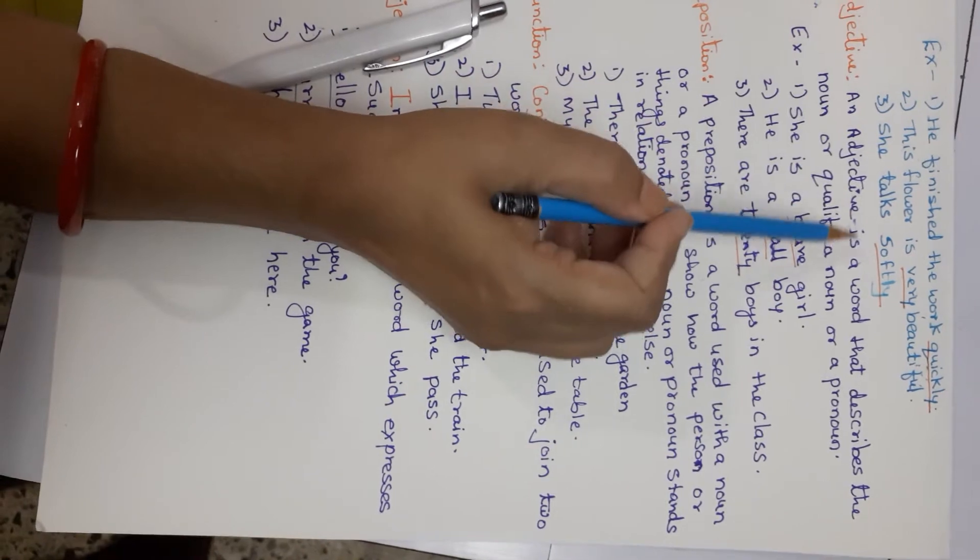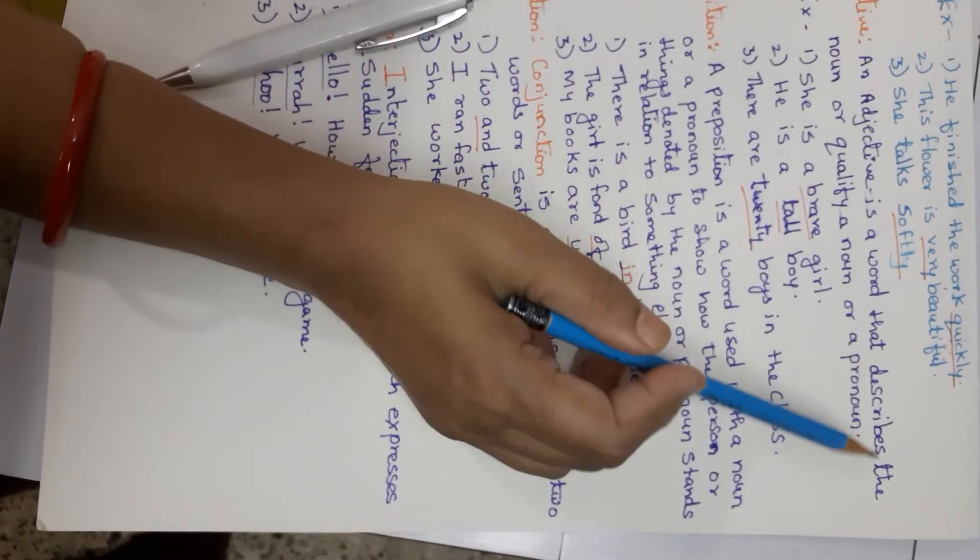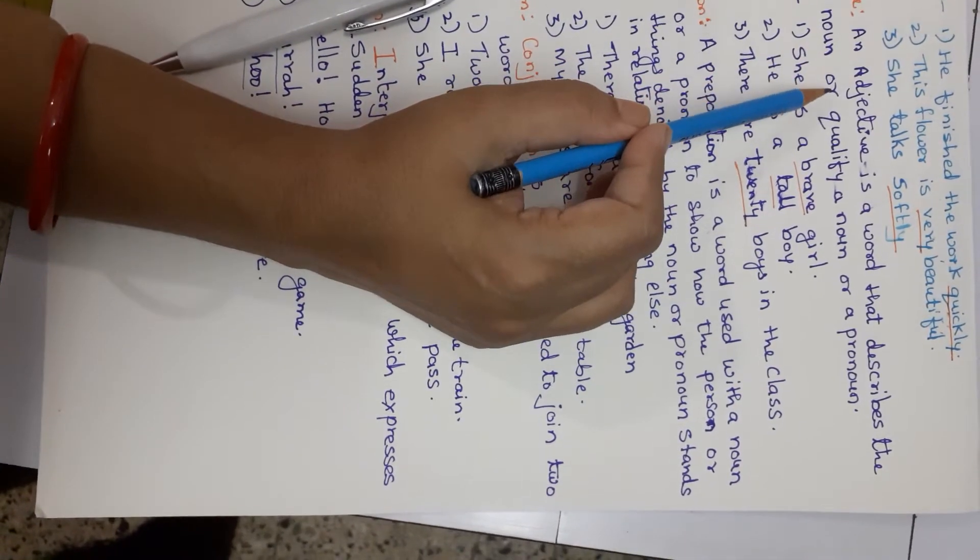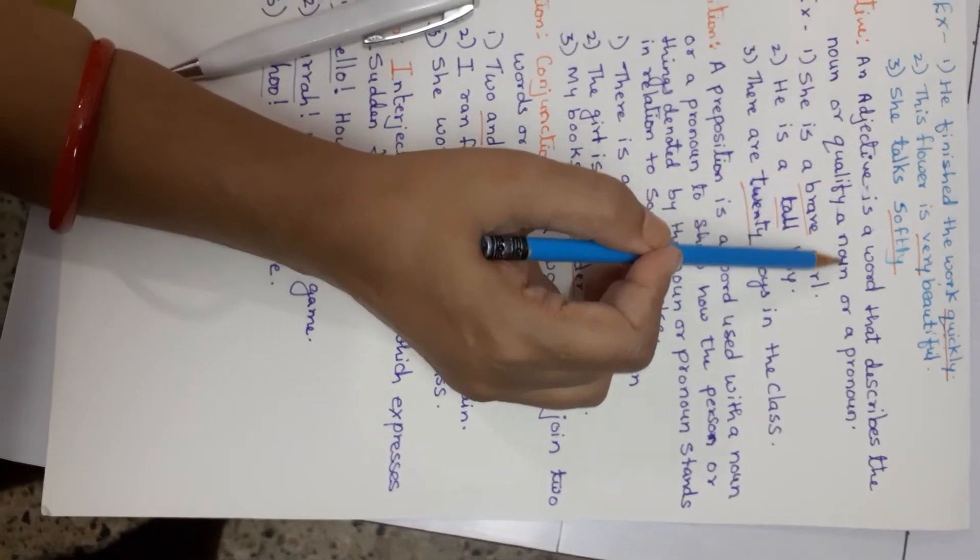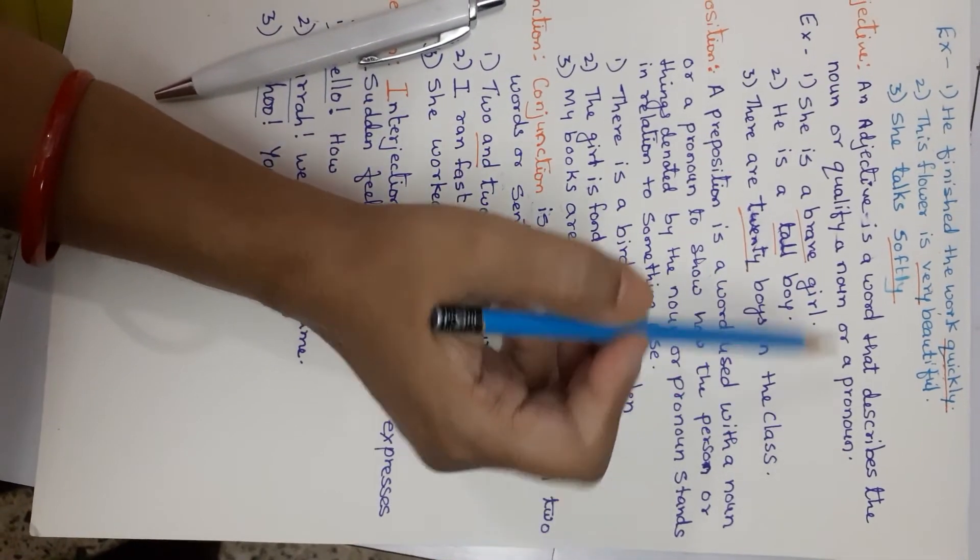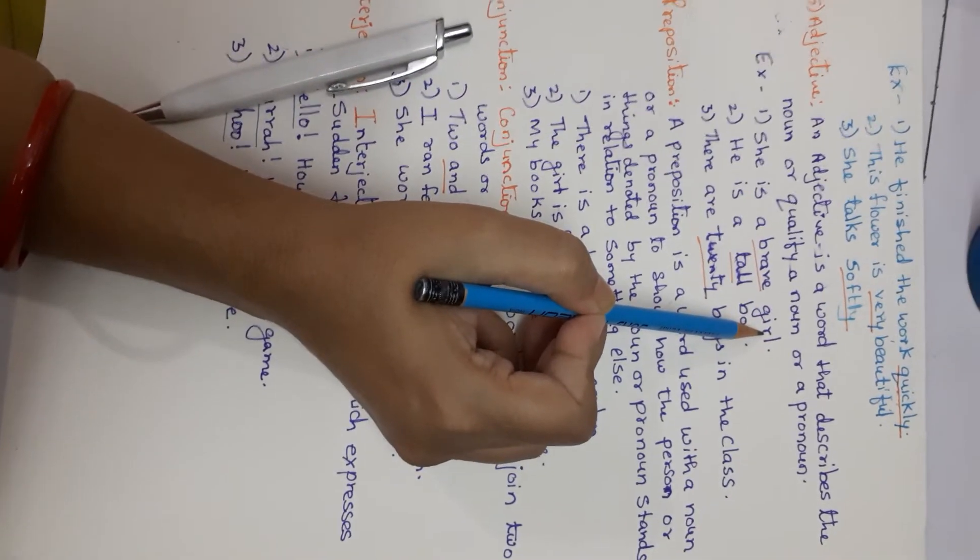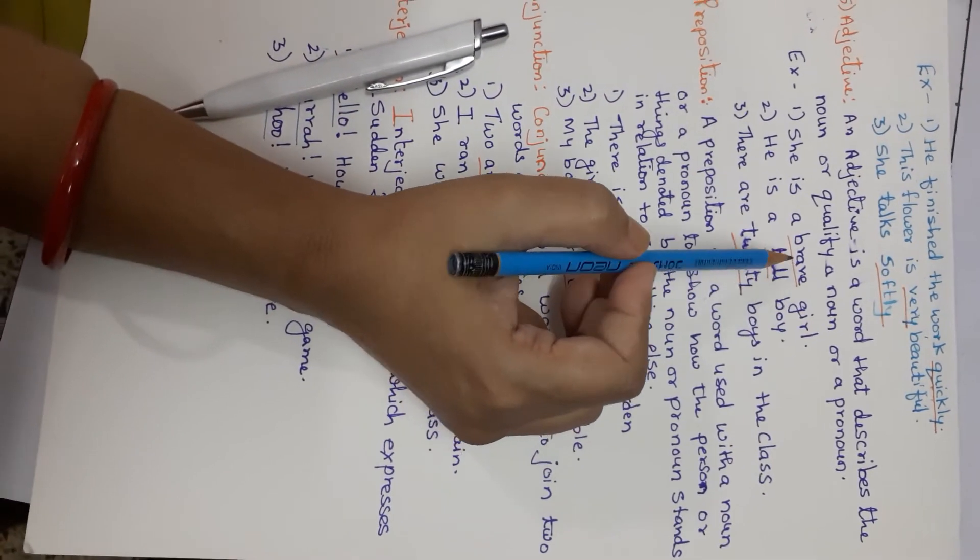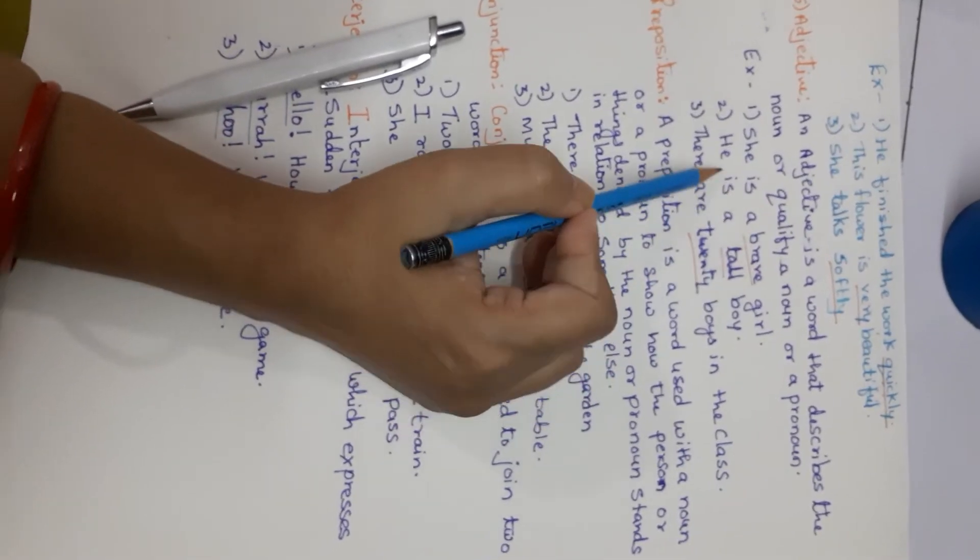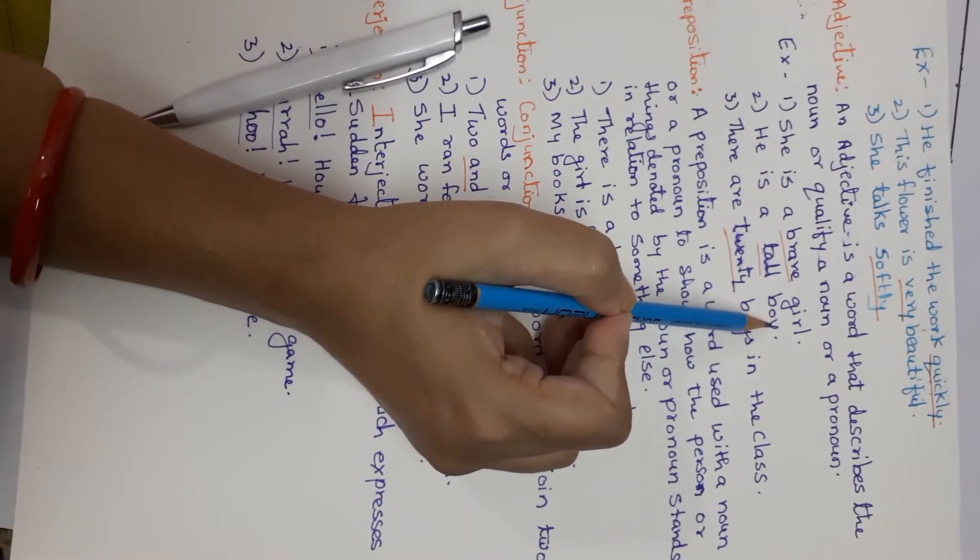Adjective. An adjective is a word that describes the noun, or you can say qualifies a noun or a pronoun. She is a brave girl. How is she? She is a brave girl. He is a tall boy.